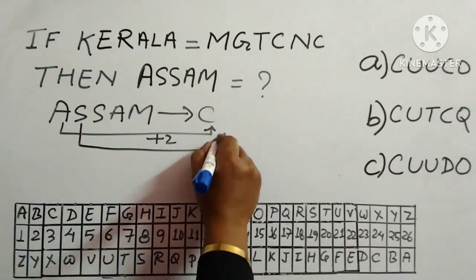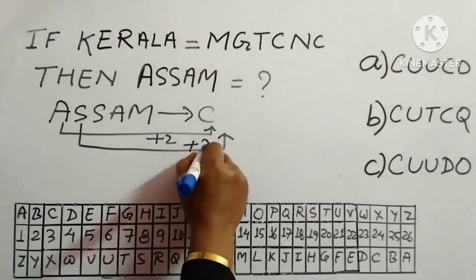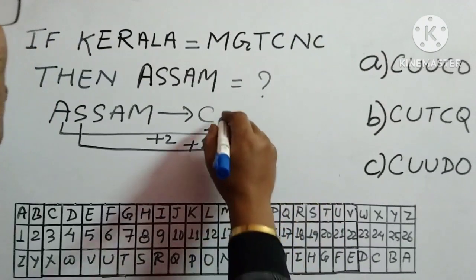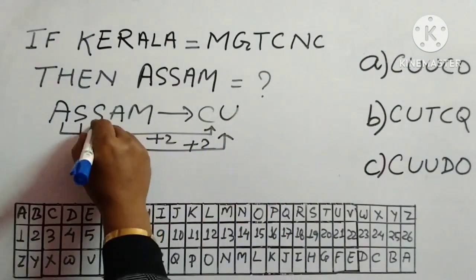after S, we have to shift two alphabets. So S is over here, then T, U. So we will write U. Again,